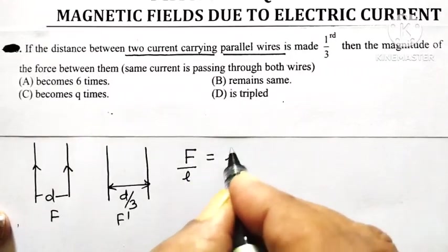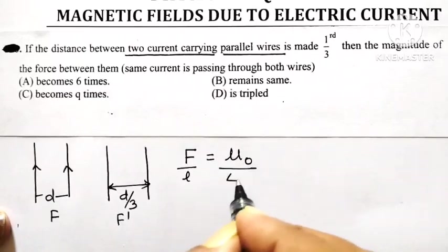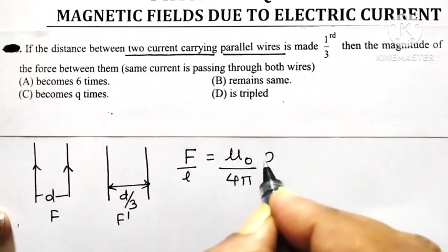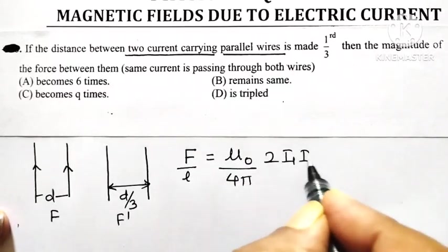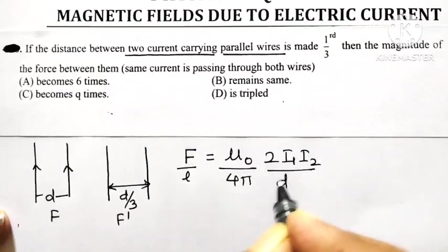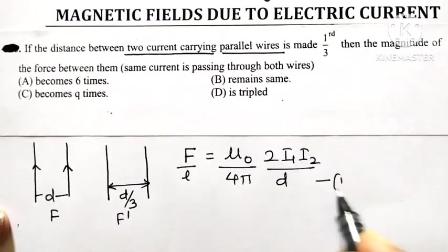Force per unit length is equal to μ₀ divided by 4π, 2I₁I₂ divided by d. This is equation number 1.